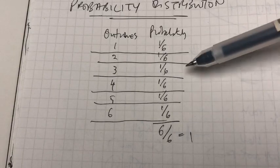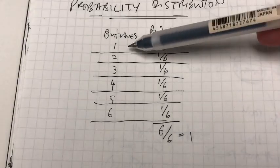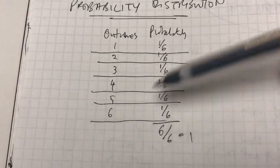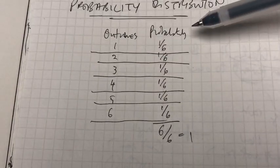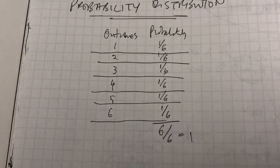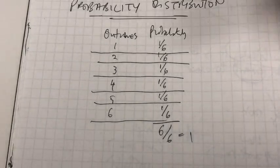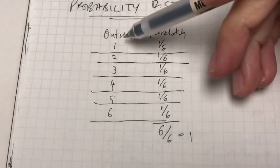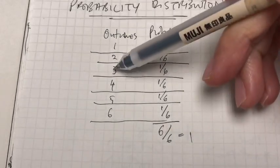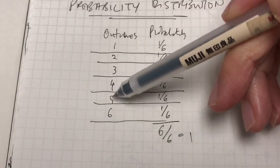As you can see, the outcomes are also mutually exclusive. What it means is if you throw the dice and you got a two, it's a two. It's not a three, it's not a four, it's not a five.